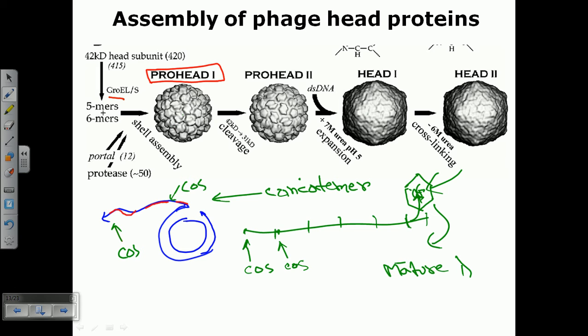During this time, much more proteins are required, and furthermore cleavage occurs to finally generate pro head 2, which is a slightly modified version of pro head 1.